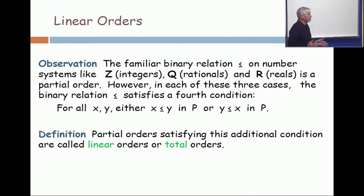The familiar less-equals on number systems become total orders—they become linear orders. We want situations like we just described, where 17 was not less than 1 billion, and 1 billion was not less than 17.